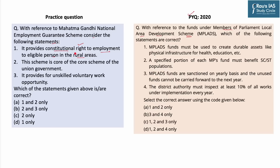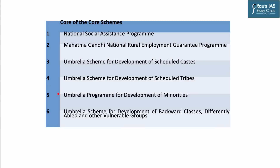The second and third pointers are correct; however, it is not a constitutional right — it is a legal right. There is no right to employment under the Constitution of India. The second statement says this scheme is a 'core of the core' scheme of the Union Government — this is correct. There are six core of the core schemes: NSAP, MG NREGA, and four schemes related to Scheduled Castes, Scheduled Tribes, Minorities, Backward Classes, and vulnerable groups.